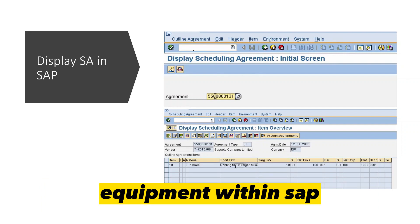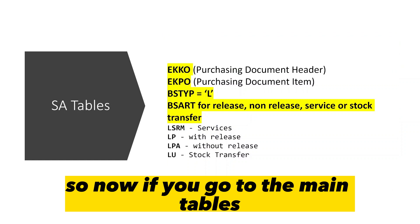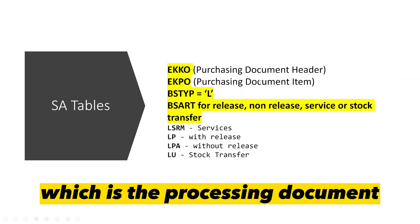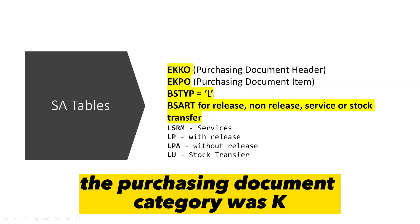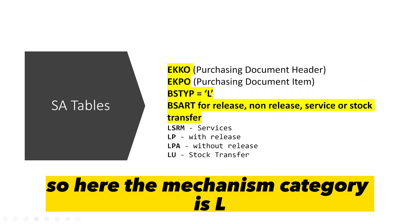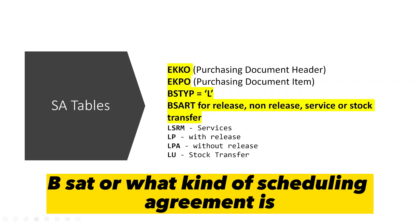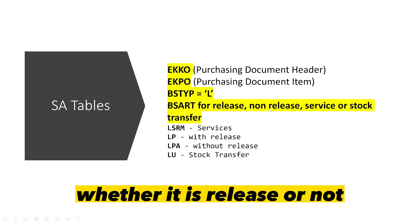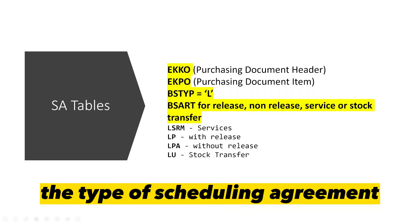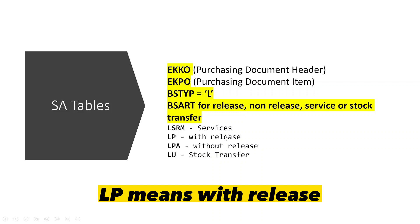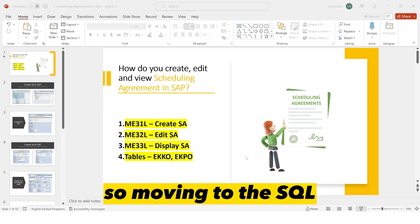The scheduling agreement data is stored in the EKKO and EKPO tables, which are the purchasing document header and line item tables. When we looked at contracts, the purchasing document category was K; for scheduling agreements the document category is L. The field BSTYP indicates the type of scheduling agreement: LSRM means services, LP means without release, LPA means with release, and LU means stock transfer.